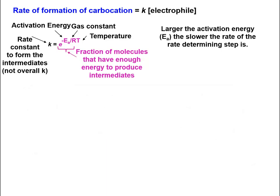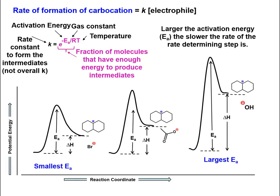As you can see from the equation, the larger the activation energy, the slower the rate of reaction. Since the bromide ion is the weakest base, or the most stable leaving group, the activation energy to form these intermediates will be the smallest. Thus this reaction will occur the fastest.